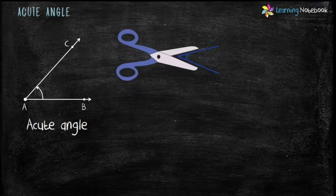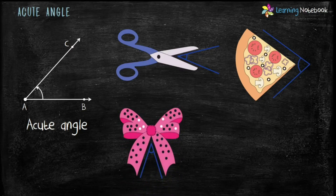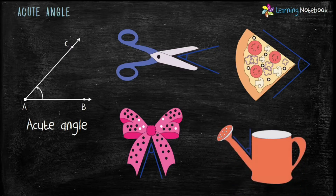Let's see some real life examples of acute angle. First is a pair of scissors — blades of open scissors make an acute angle. Second is a pizza slice — edges of a pizza slice make an acute angle. Third is a bow, which makes an acute angle. Fourth is a gardener's mug, which also makes an acute angle as shown here.